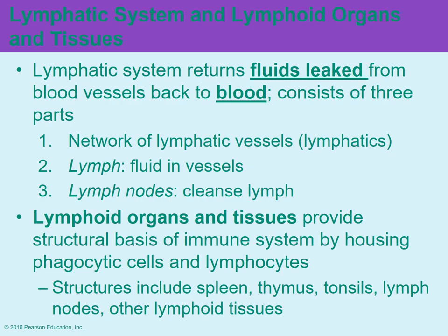The lymphoid organs and tissues help to support the immune system. They tend to house a lot of your phagocytic cells that will engulf and carry out phagocytosis — basically chew up and eat up anything foreign. They also house your lymphocytes, which are one of the five types of leukocytes, or white blood cells, involved with the immune system. These lymphoid organs and tissues are scattered throughout the body and include the spleen, the thymus, the tonsils, and the lymph nodes, along with some additional lymphoid tissues.